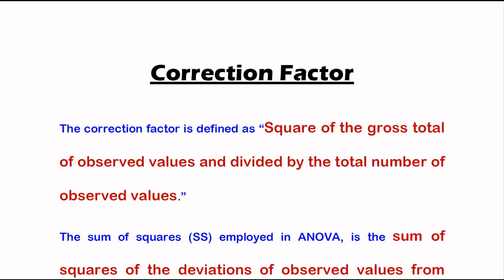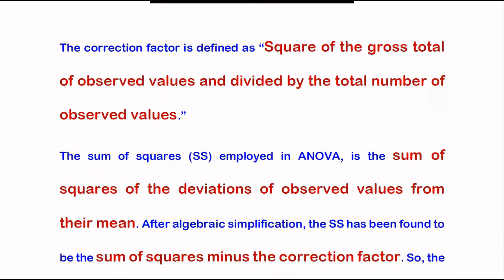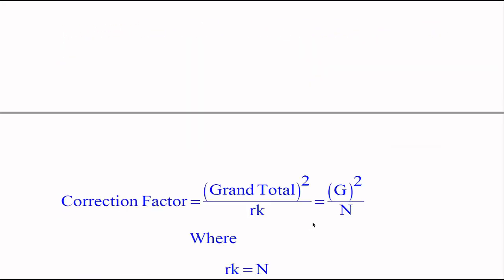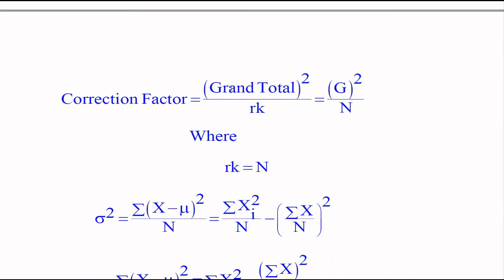So what is correction factor? Square of the grand total of observed values divided by the total number of observations. Here we can see correction factor: square of the observed values. Observed values are grand total divided by the total number of observations.